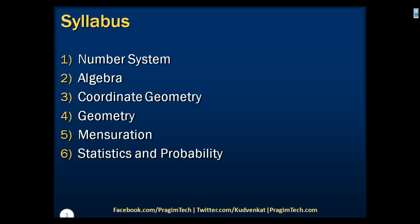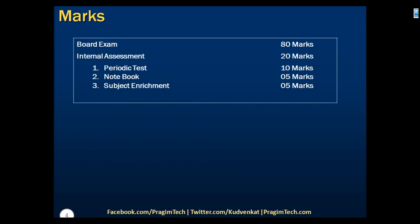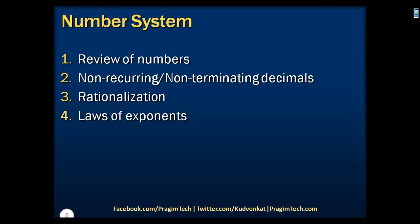Now let's look into how marks are distributed between board exam and internal assessment. The board exam is for 80 marks whereas internal assessment is for 20 marks. These 20 marks are divided into 3 components: periodic test for 10 marks, notebook for 5 marks, and subject enrichment for 5 marks.